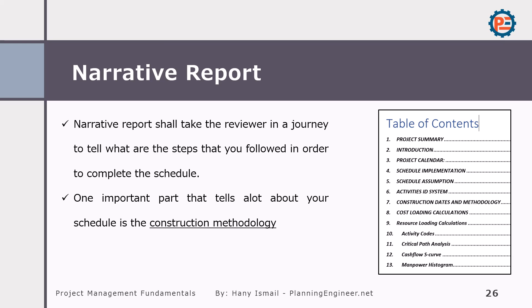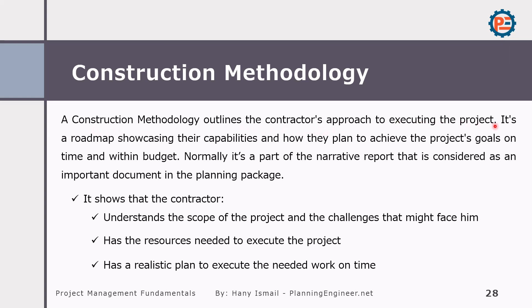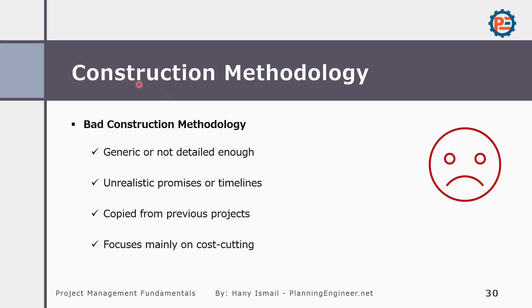One important part of the narrative report tells about your construction methodology. Construction methodology outlines the contractor's approach to executing the project — it is like a roadmap showing how you plan to execute the project in simple graphs or words. It shows that you understand the scope of work, have the resources, and planned in a realistic way. A good construction methodology should be well organized, easy to understand, specific to the project needs, demonstrate expertise, and show flexibility. A poor construction methodology is very generic, not detailed enough, unrealistic, copy-pasted from other projects, or focuses mainly on cost-cutting.